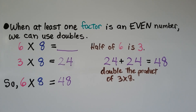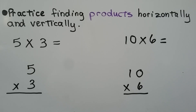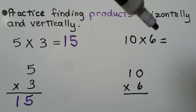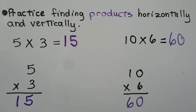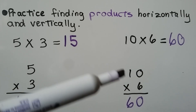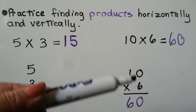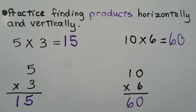Just make sure that at least one factor is an even number. You want to practice finding products horizontally as a multiplication sentence and vertically when they're stacked. 5 times 3 is 15; 10 times 6 is equal to 60. Make sure you've got your 1s lined up and your 10s lined up. One of the biggest mistakes people make in math is not having their place values and columns straight, which causes errors.